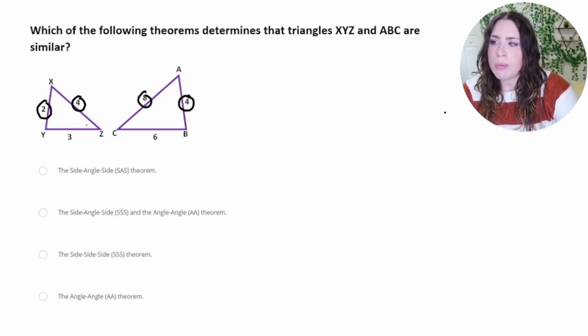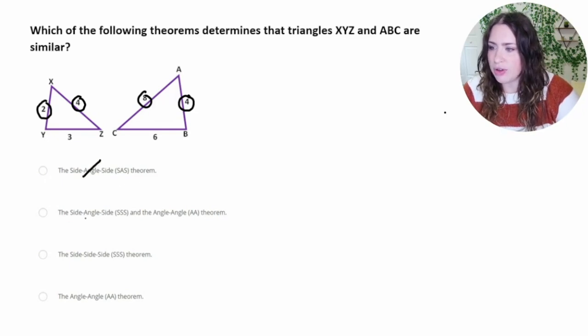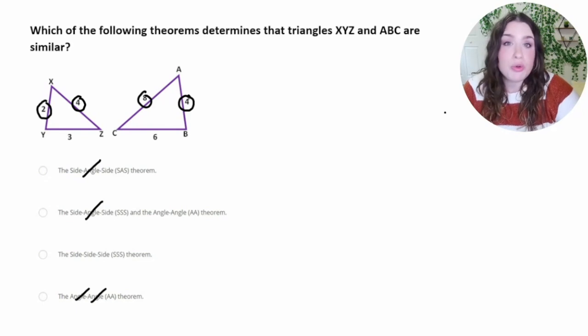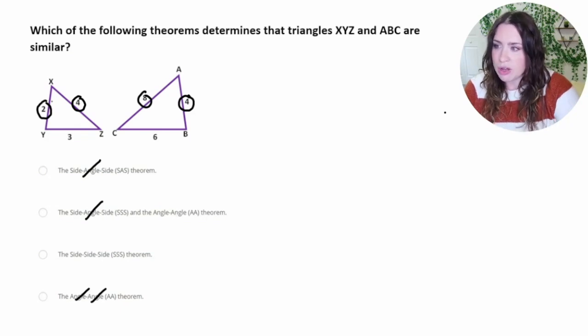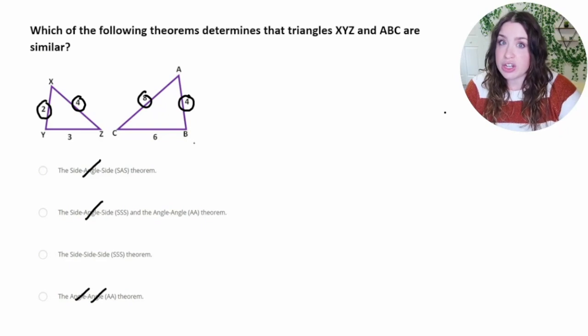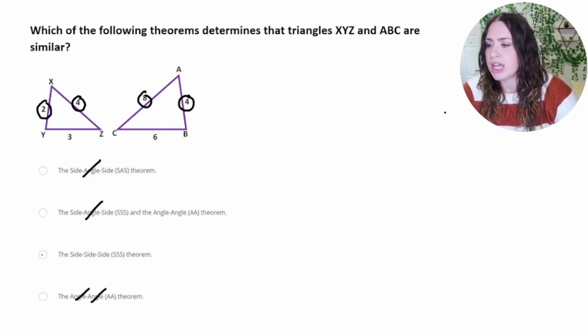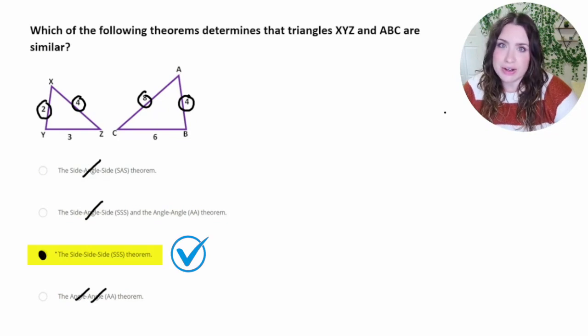So because we only know side measures, we can kind of eliminate anything that deals with angles because we know no angle measures, right? We're only giving side measures. So even just by doing that, it really only leaves one option. But also we can see that each of the sides are proportional. And that's a good thing to check in case one of the answers is they aren't similar. So the correct answer is the side-side-side theorem.